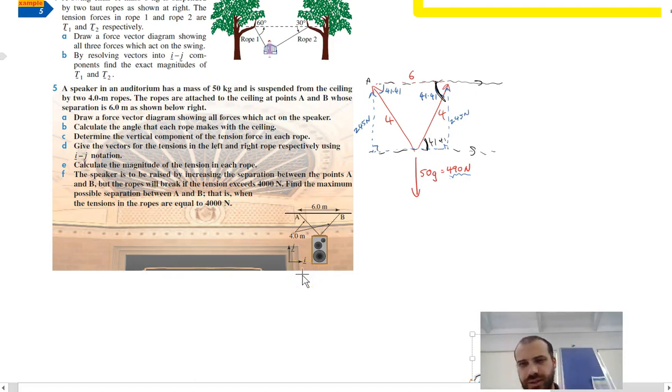All right, so this is a question I got from somebody in class today. I think it's probably worthwhile talking about. You can read the question. Now, the student came to me with question A done, which is draw the diagram. They've calculated the angle that each rope was making with the ceiling, so I'm not going to go through that.